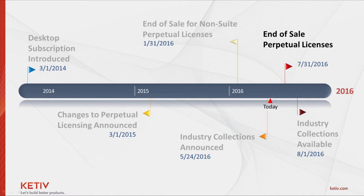Autodesk announced changes to perpetual licenses as early as March 2015, so it should be no surprise that perpetual licenses have an end date approaching in a few weeks. It's toward the end of June now, and we have until the end of July to acquire any additional perpetual licenses. July 31st, 2016 is the end of sale. Some products have already been phased out, but Vault Professional, Simulation, and some suites are still available for purchase today and will be going away shortly.